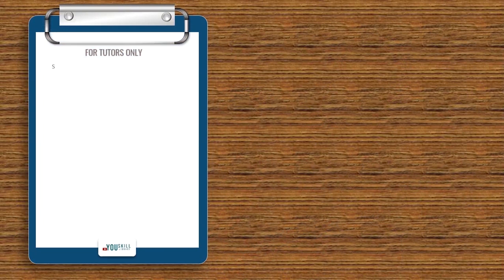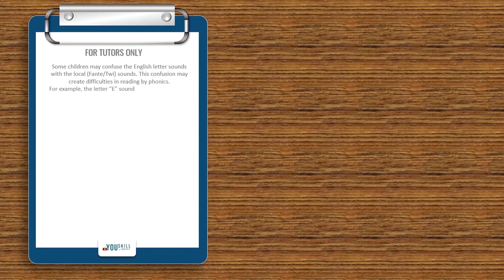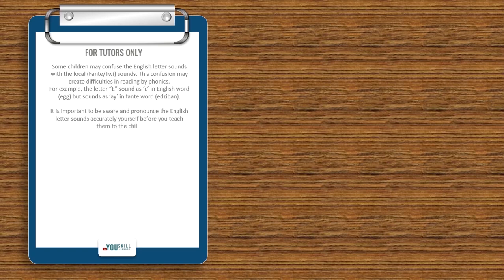This is for tutors only. Some children may confuse the English letter sounds with the local — that is, the fancy or local language — sounds. This confusion may create difficulties in reading by phonics. For example, the letter E sounds as E in the English word, such as egg, but sounds as E in a local word. It is important to be aware of this and pronounce the English letter sounds accurately yourself before you teach them to the child.